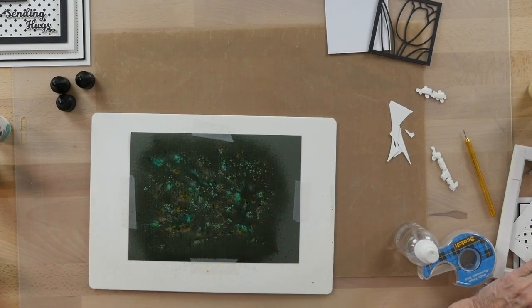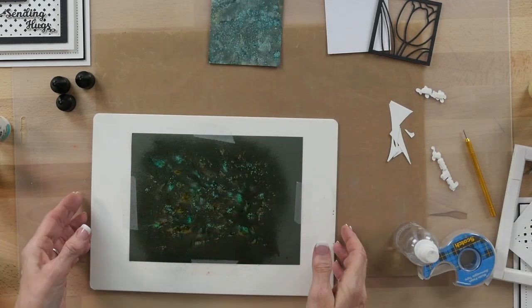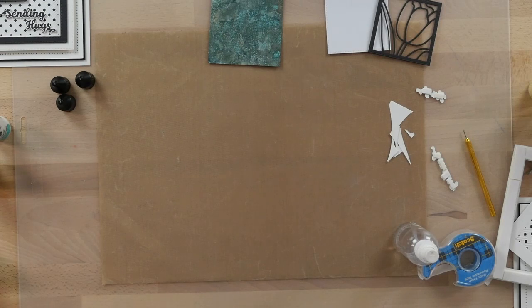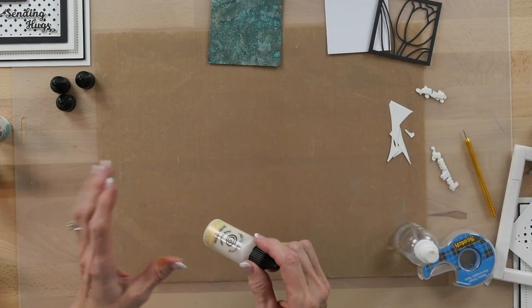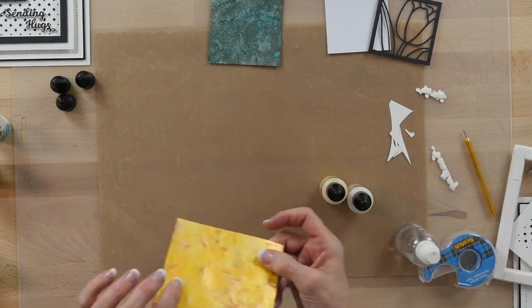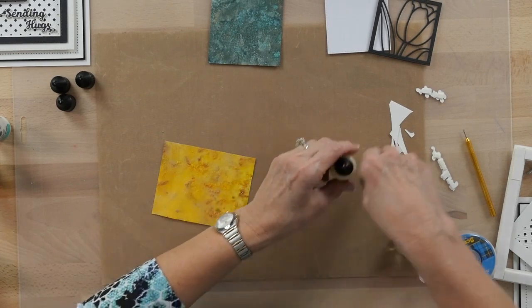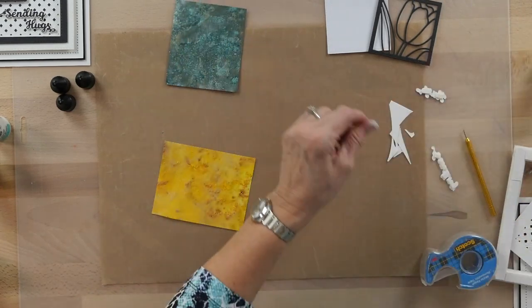I've got one I've done earlier. We are going to use this piece for our paper piecing. On the yellow one for the actual tulip, I've used straw yellow and sun yellow, and I've done that fairly bright because I wanted that to really show up. I'm going to go ahead and set that aside.